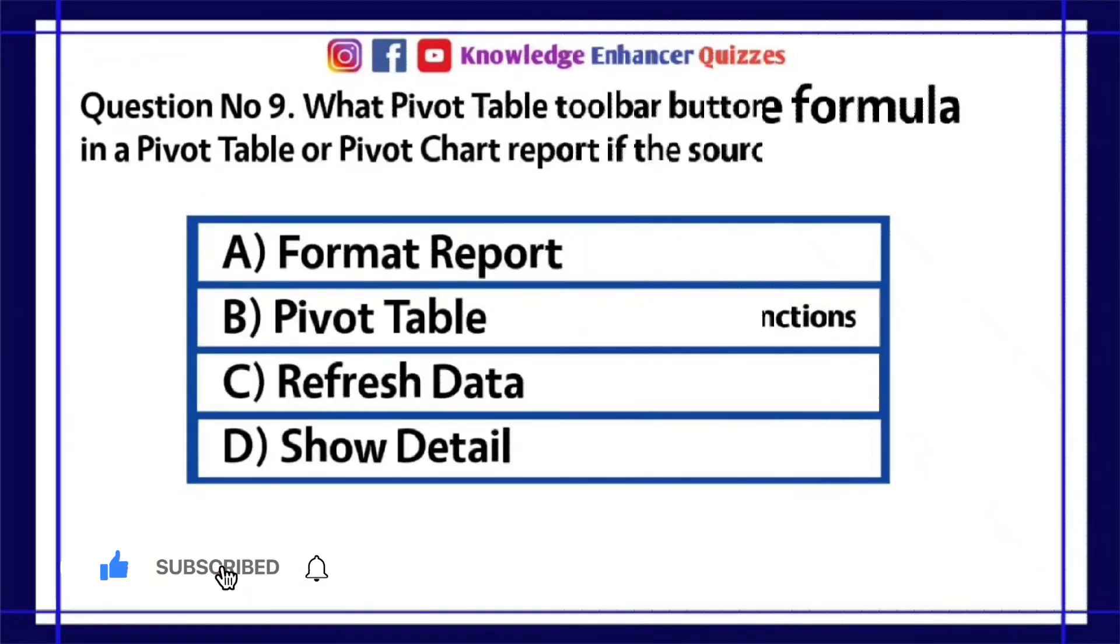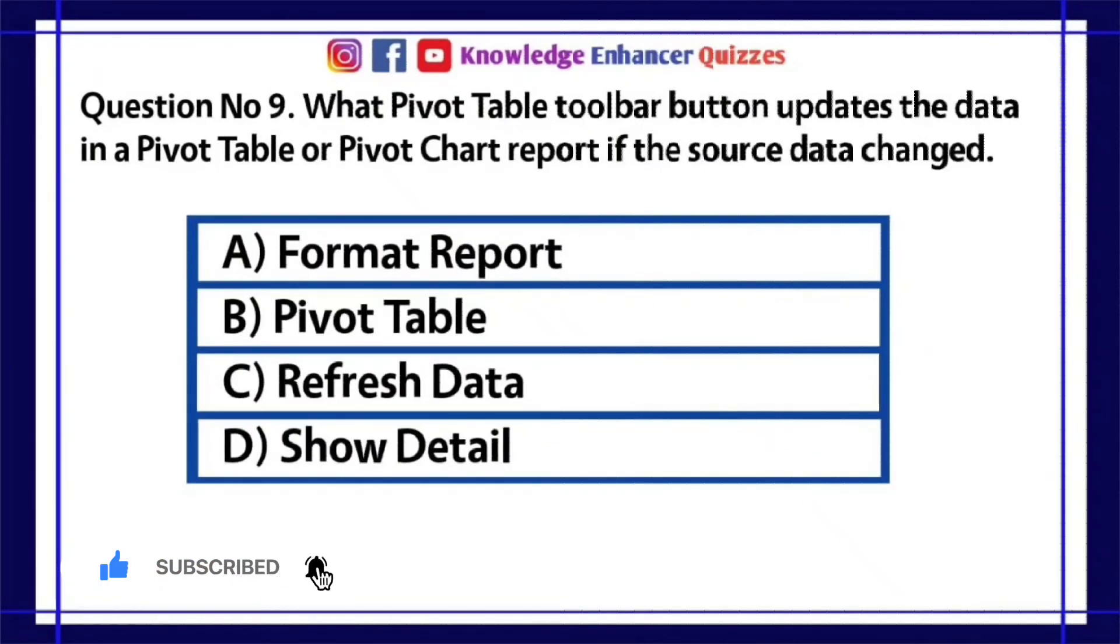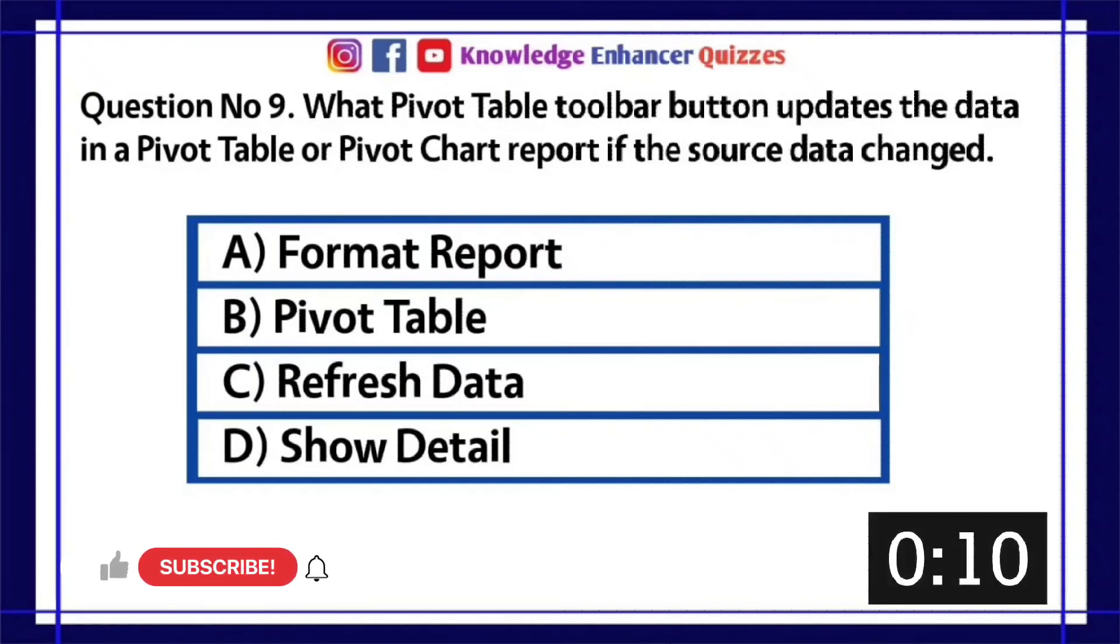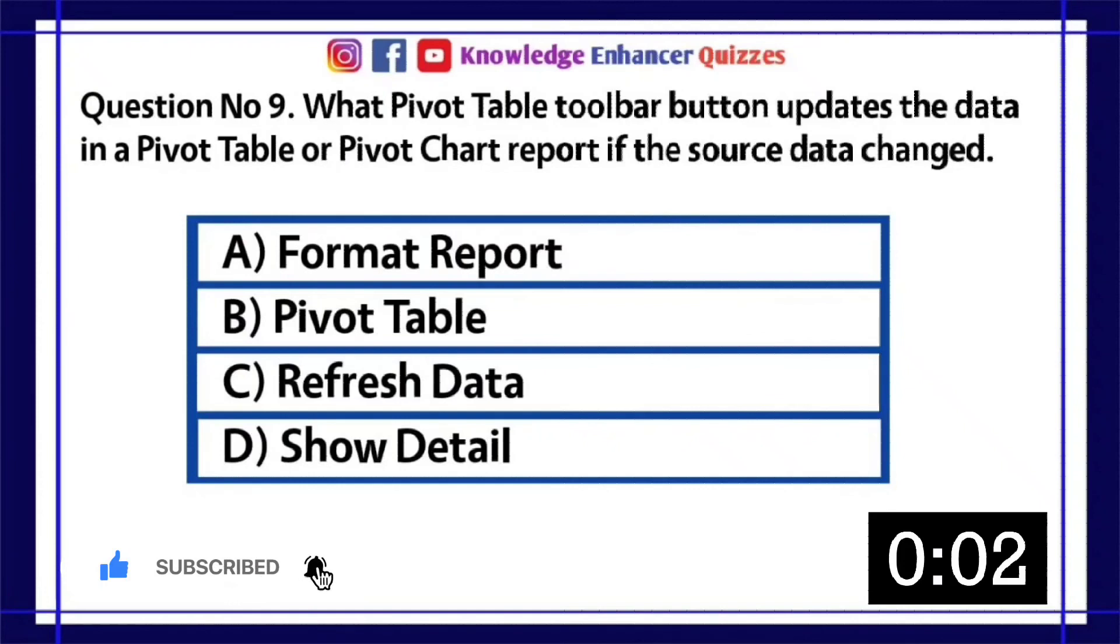Question number 9. What pivot table toolbar button updates the data in a pivot table or pivot chart report if the source data changed? A. Format report. B. Pivot table. C. Refresh data. D. Show detail. Option C is the right answer.